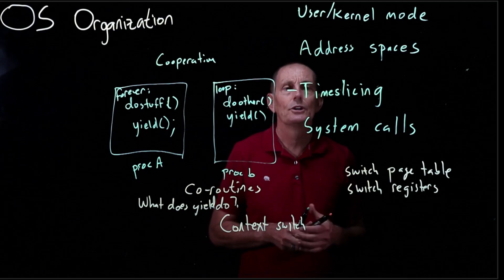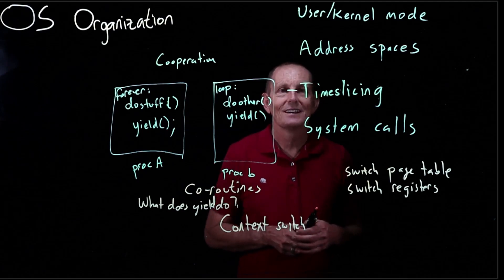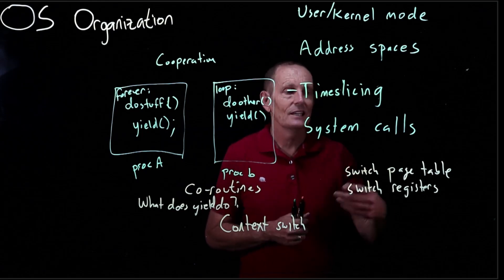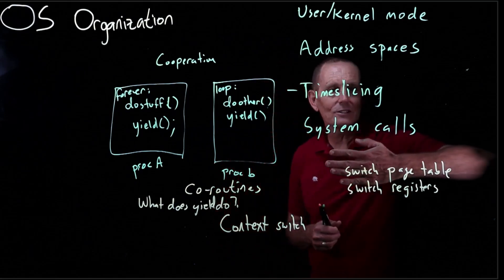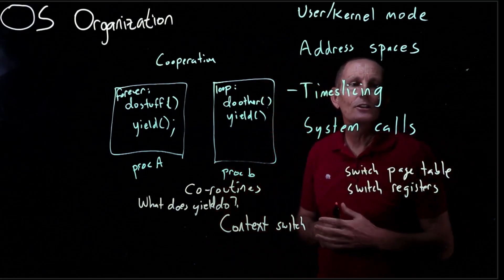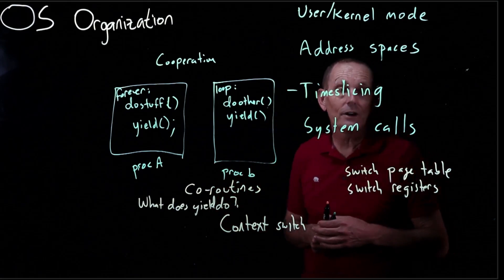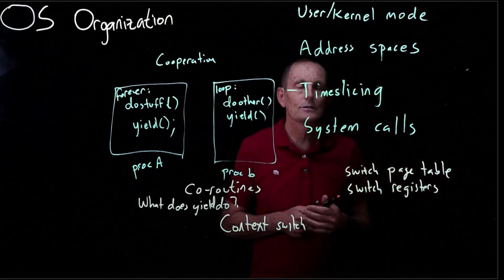And if you were trying to implement cooperative threads in a single process it'd be the same thing except you'd be sharing the same page table. So you would not switch the page table. Instead you would just switch registers. And there are libraries to do that and that's how Python works for instance with its generators.